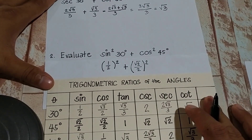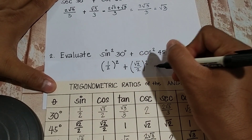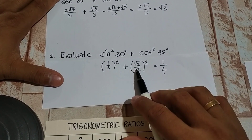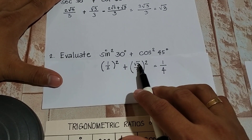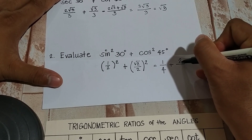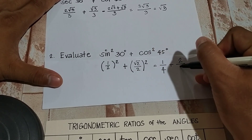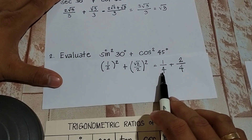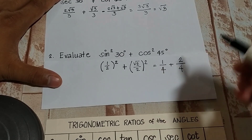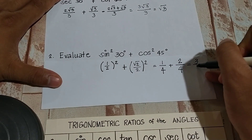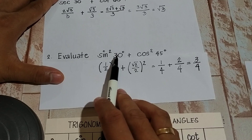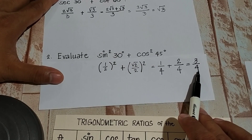Let's now simplify. What is 1 half squared? That is equivalent to 1 over 4. Now, square root of 2 over 2, squared — squaring the numerator gives square root of 2 squared, which is 2, and the denominator 2 squared is 4. They are now on the same denominator, so we simply combine the numerators: 1 plus 2 gives us 3 over 4. So sine squared 30 degrees plus cosine squared 45 degrees equals 3 fourths.